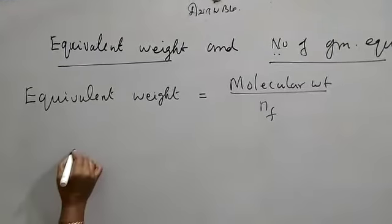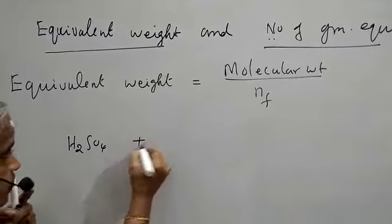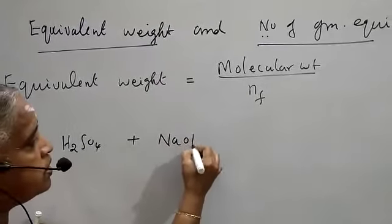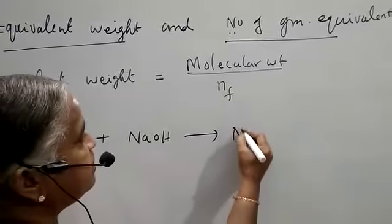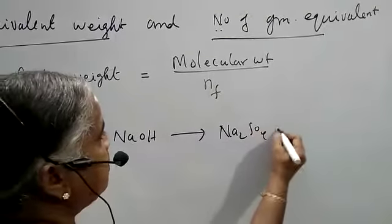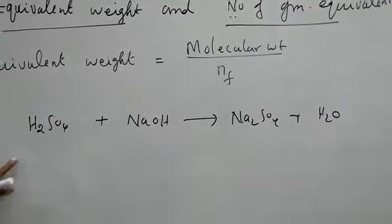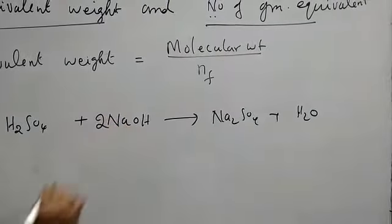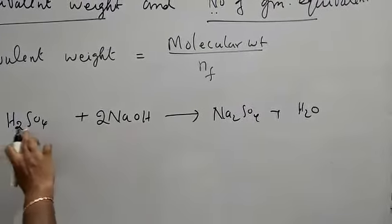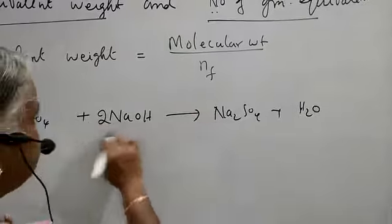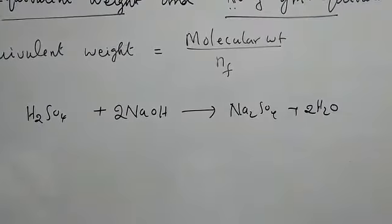Take any acid, for example sulphuric acid. The base, well known sodium hydroxide, reacts to give sodium sulphate plus water. Now let us balance the equation. The reaction is H2SO4 plus 2 NaOH. So the reaction is balanced.